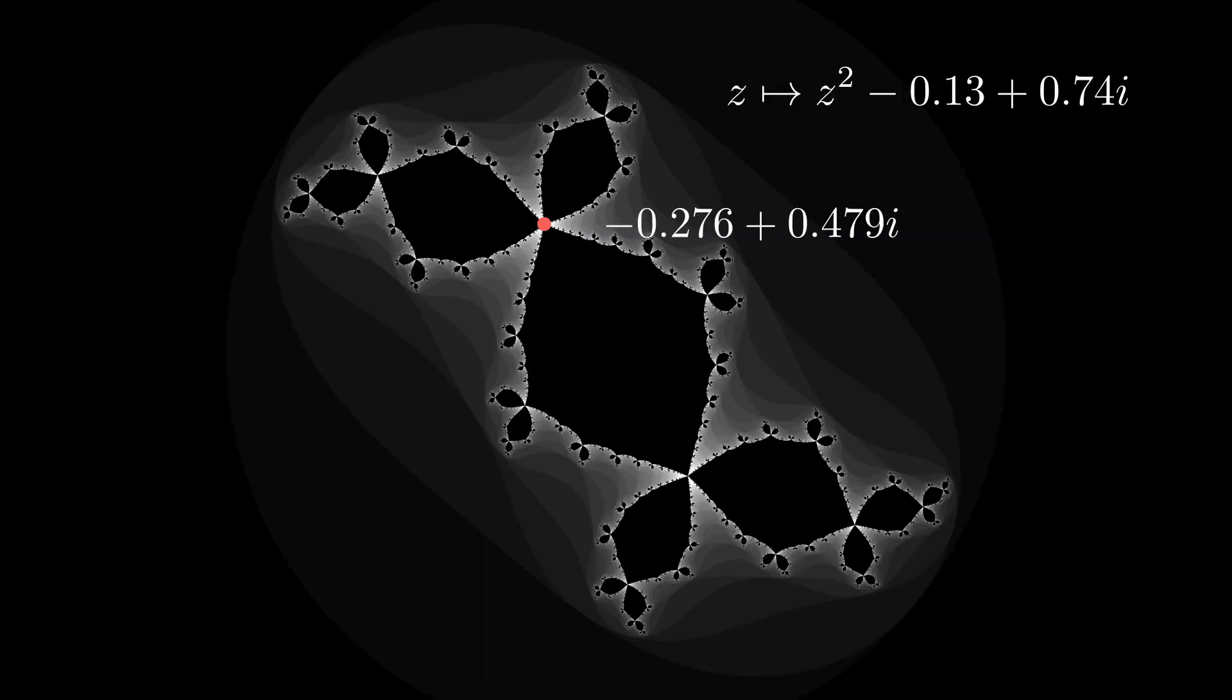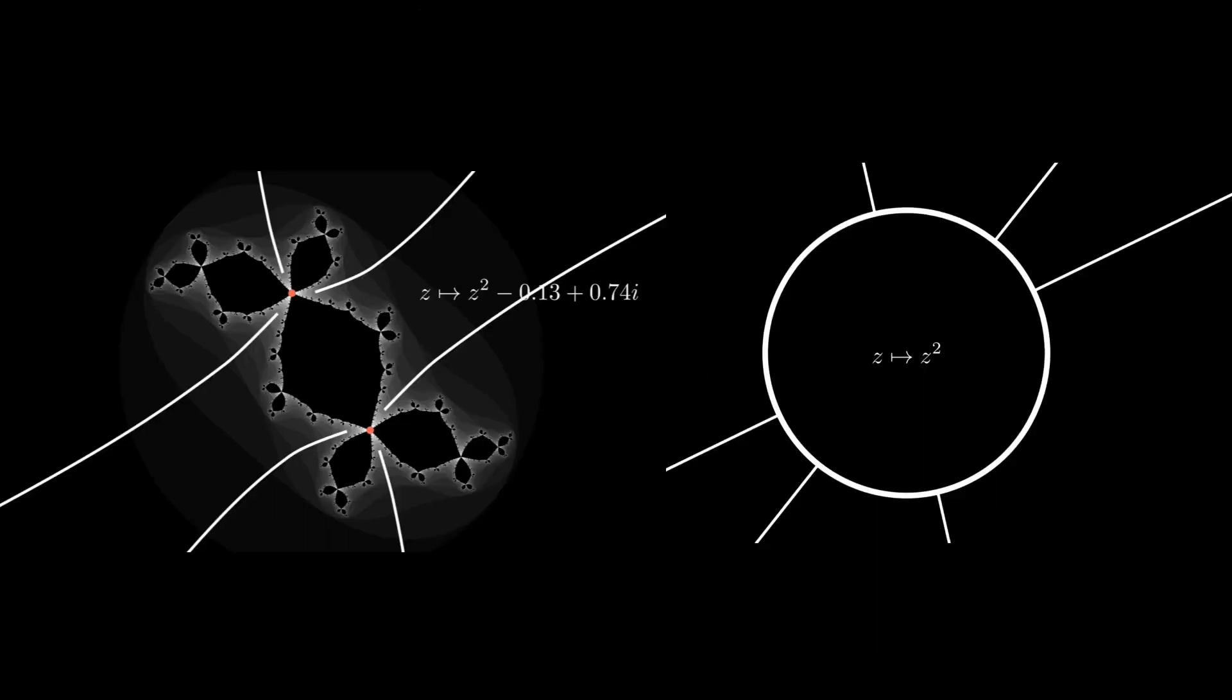The fixed point we've been using is in the Julia set, so its pre-image must also be in the Julia set and will also be a cut point. Therefore, we can follow the same process as we did with the fixed point. Find the rays the external rays correspond to, and draw cords between their endpoints.